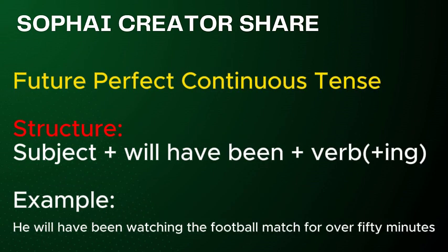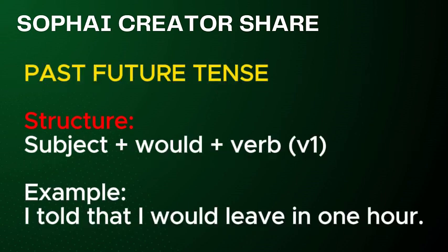Future perfect continuous tense. Structure: Subject plus will have been, plus verb plus -ing. Example: 1. He will have been watching the football match for over 50 minutes. Past future tense. Structure: Subject plus would, plus verb V1. Example: I told that I would leave in one hour.